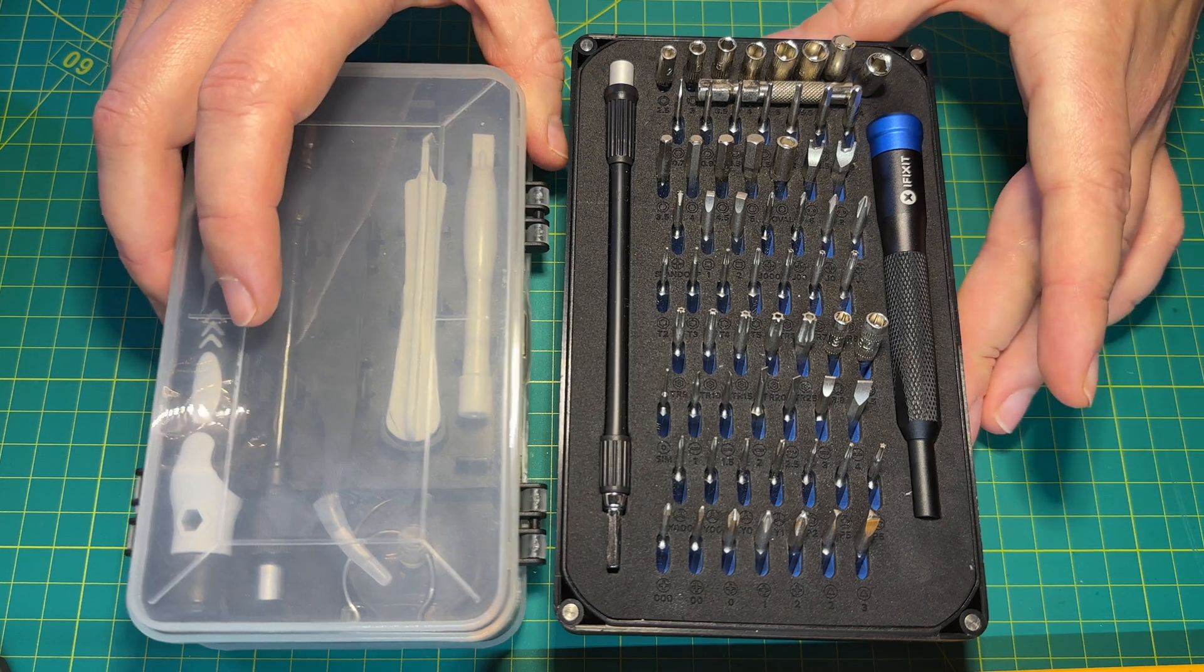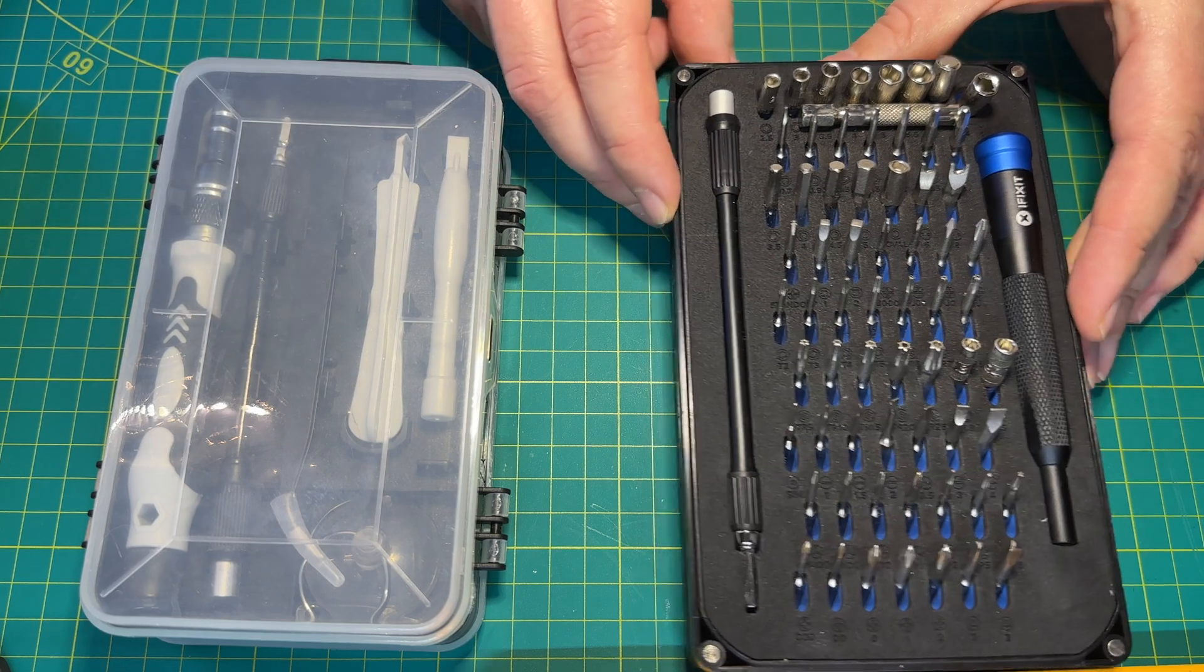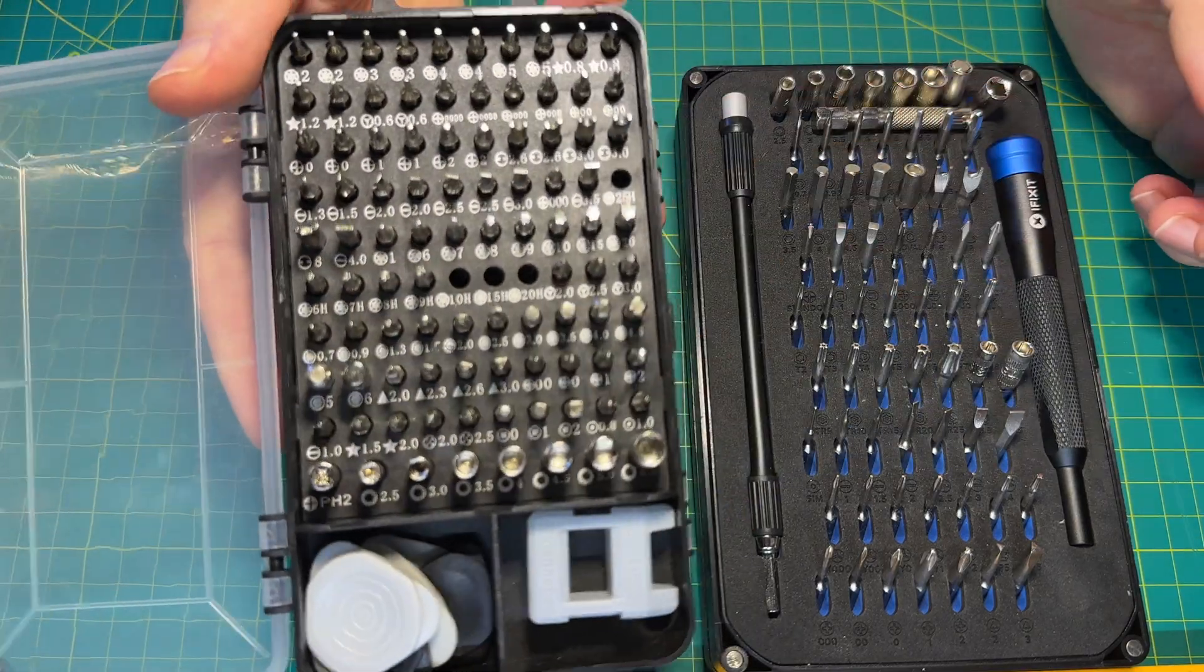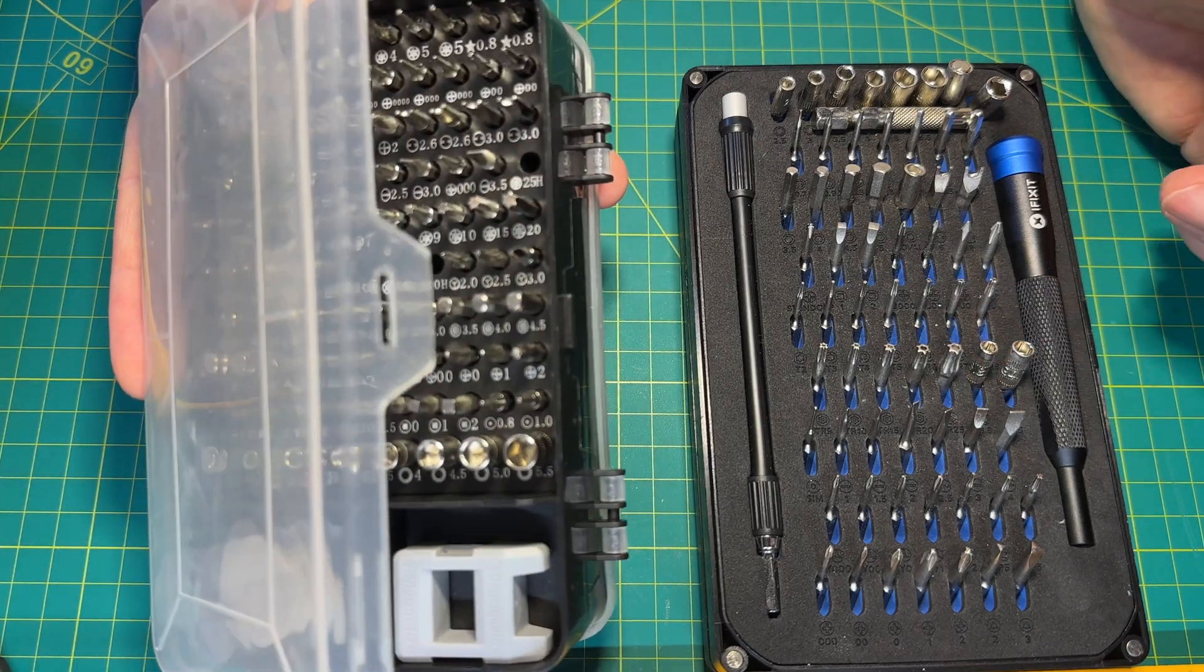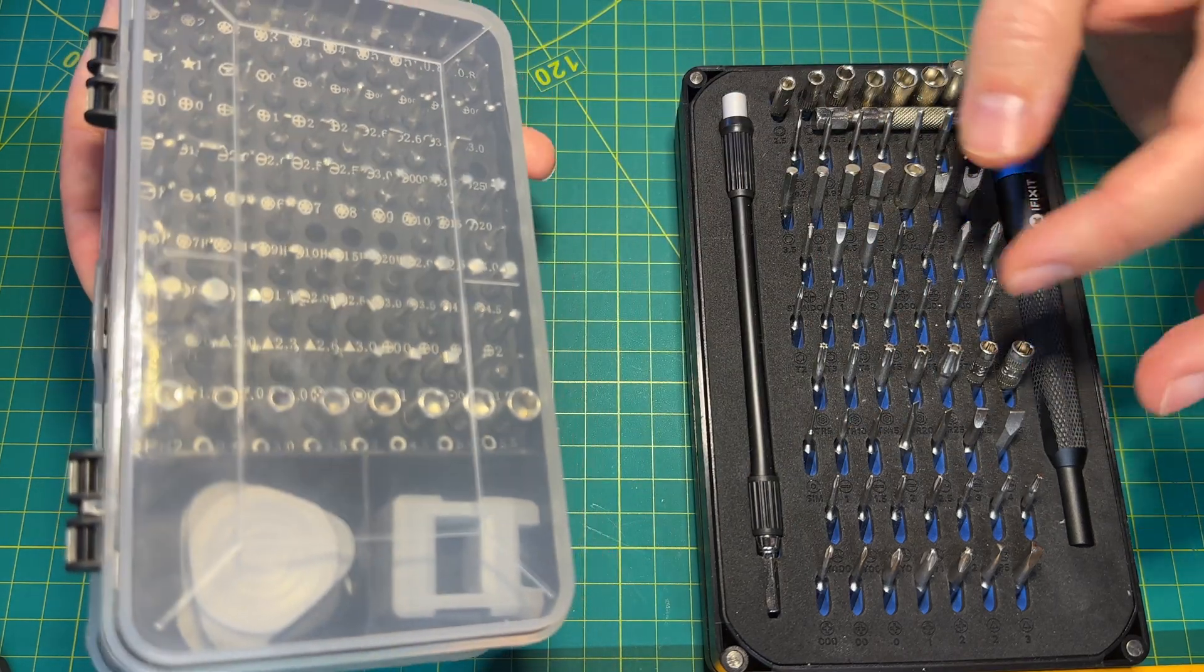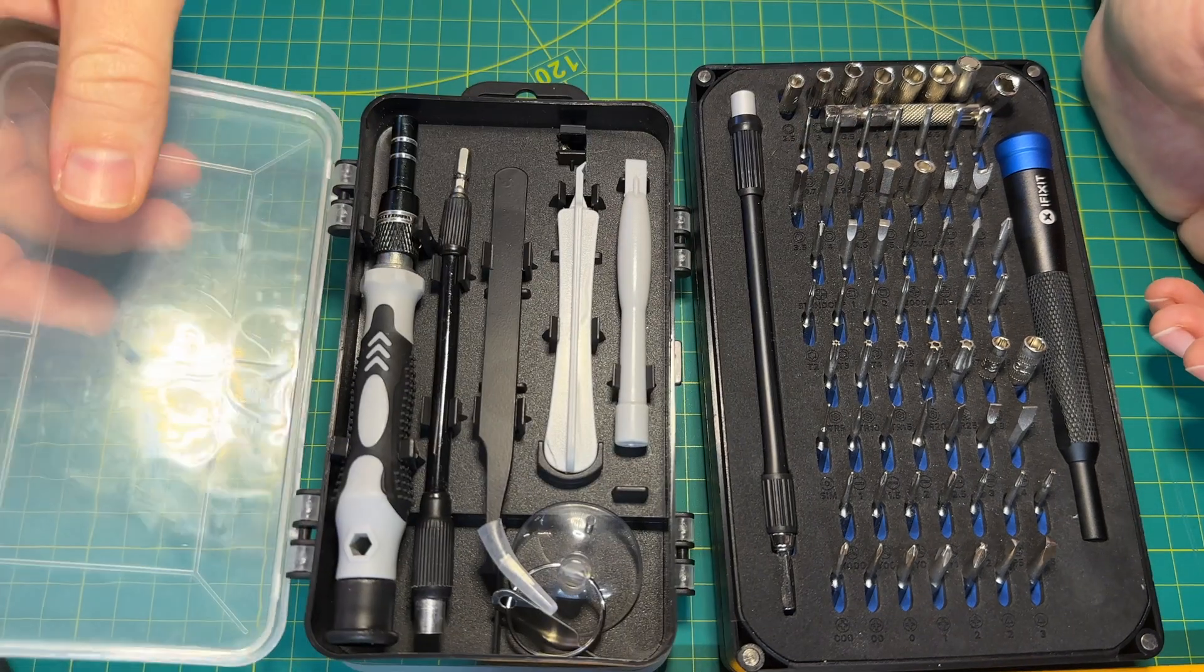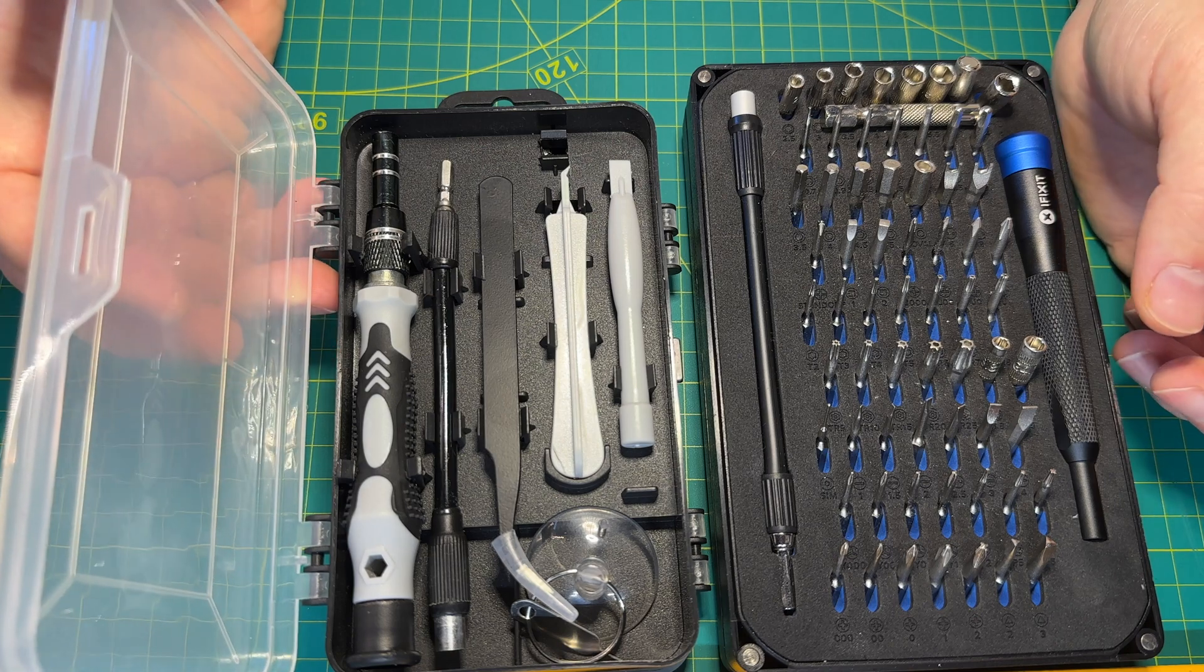At some point you'll need precision screwdrivers, and you can go for iFixit, which is a reputable brand, very good quality tools. Or you can get something much much cheaper. And it will have most of the bits that you need. The quality is not as good as iFixit. I think Linus Tech Tips did a comparison between these tools and whatever you can find on AliExpress or elsewhere. But to get started, this will do the job, and they're fairly affordable.